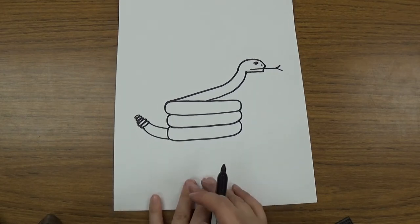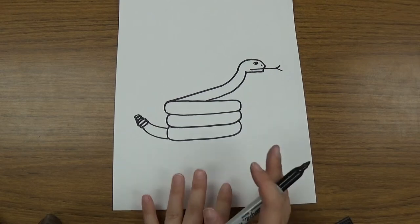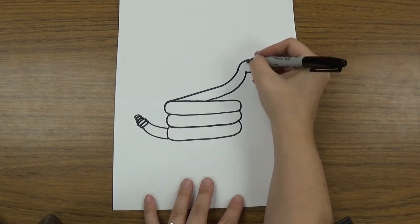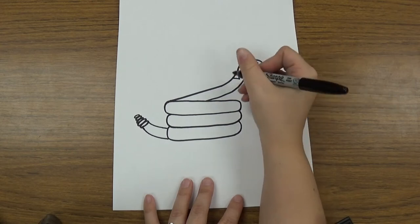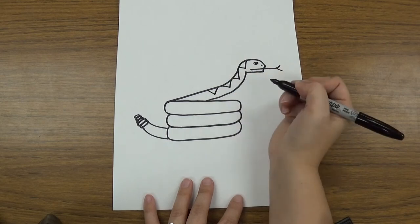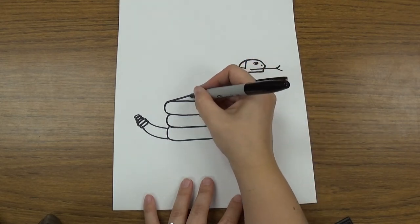The next part I'm gonna do is I'm gonna draw some patterns on him. But you can choose if you want to add them or if you want to add your own pattern. You can do it however you decide. So for mine I'm gonna make kind of triangle shapes that go down the back of my snake. So you can decide if you want to make these triangle shapes on yours or if you want to stop and do your own design.